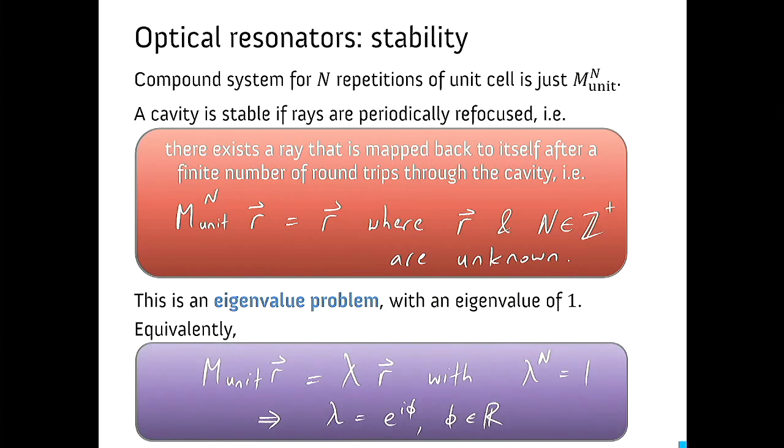So yeah it's an eigenvalue problem with an eigenvalue of one. And we can equivalently write this if we take the nth root of the equation above as this purple expression, which is a much more familiar eigenvalue problem. So it's an eigenvalue problem for m unit on some ray vector r with an eigenvalue of lambda. But lambda can't be anything now. We must have this condition that lambda raised to the power of n is equal to unity. And straight away that tells us that lambda must be a complex phasor. It's just e to the i phi where phi is real. So it's a complex number with modulus one described by some argument phi and it lives on the unit circle in the argand plane.